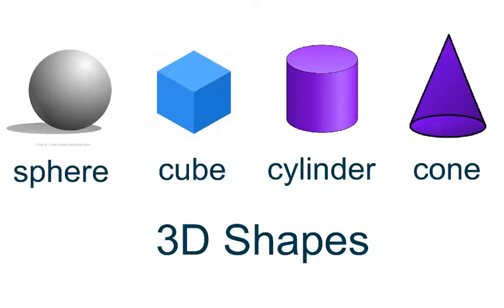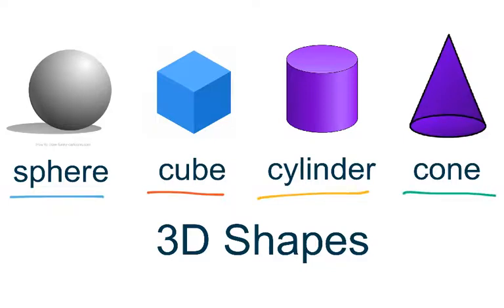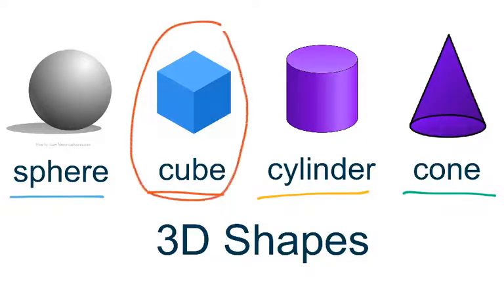Hi everyone, this is Ms. Torres and we are going to continue learning about our 3D shapes. As a review, the four 3D shapes that we will be learning about this chapter are the sphere, cube, cylinder, and cone. Those are the four 3D shapes we're learning, but today we are going to focus on the cube.